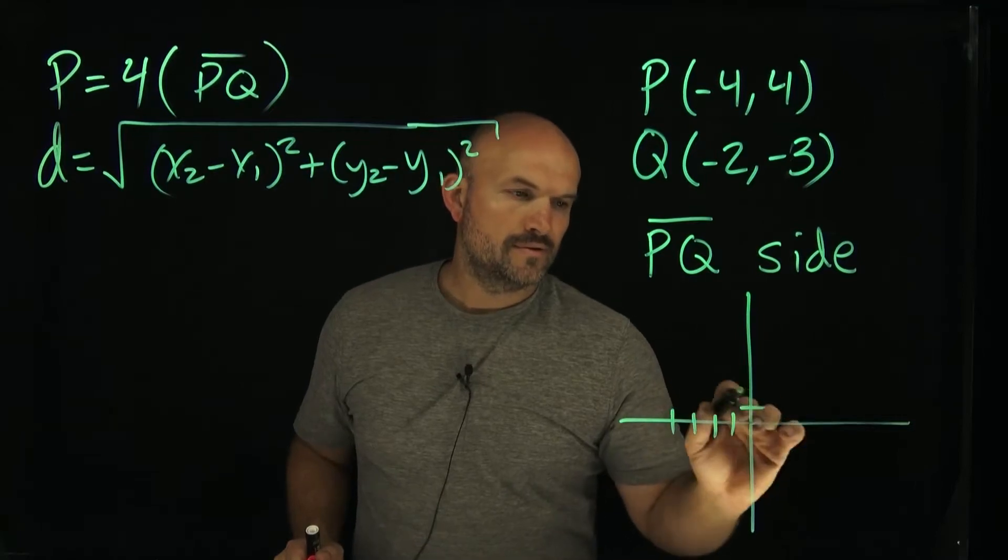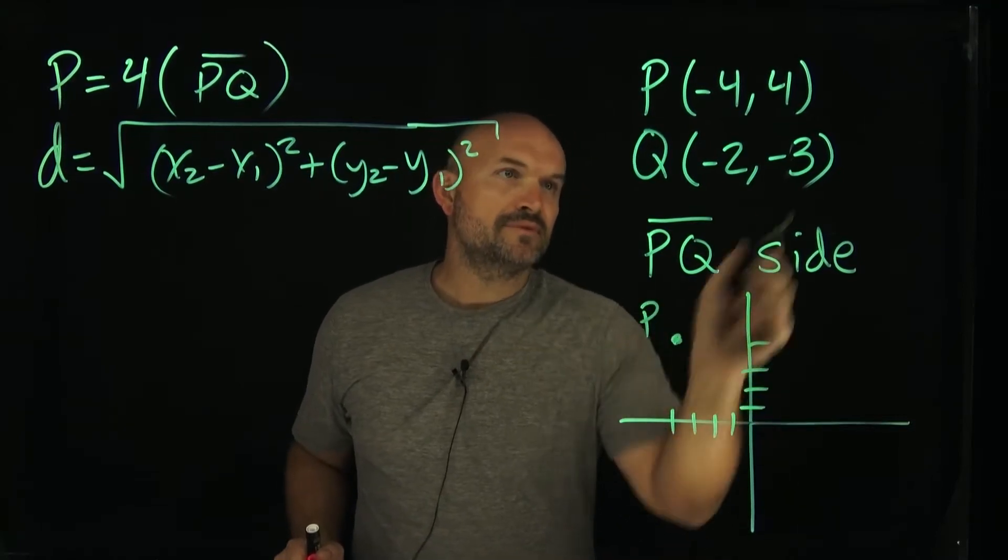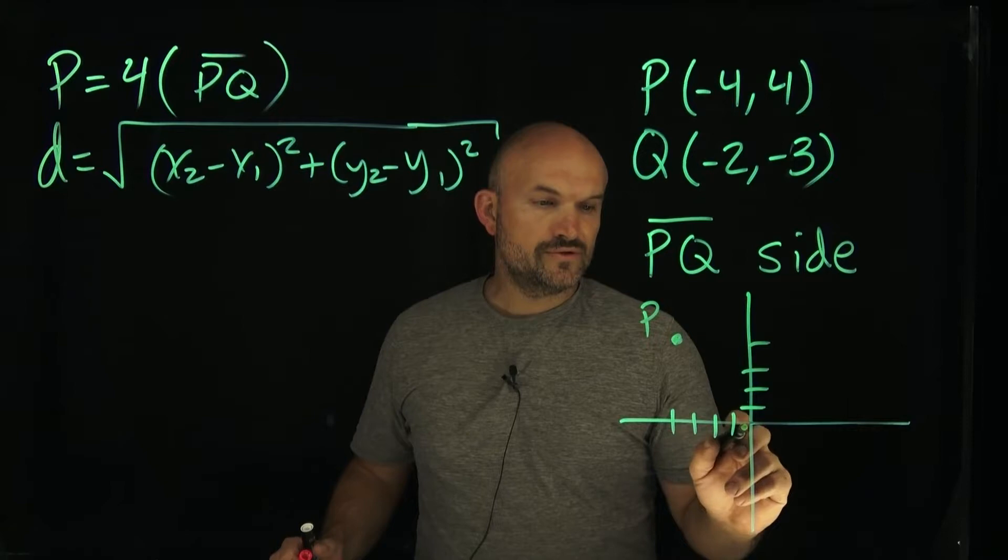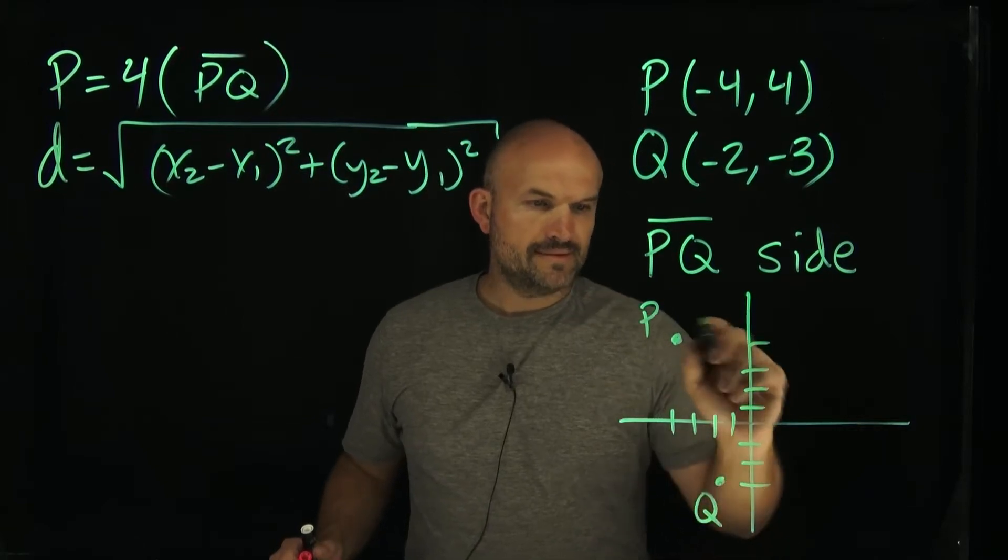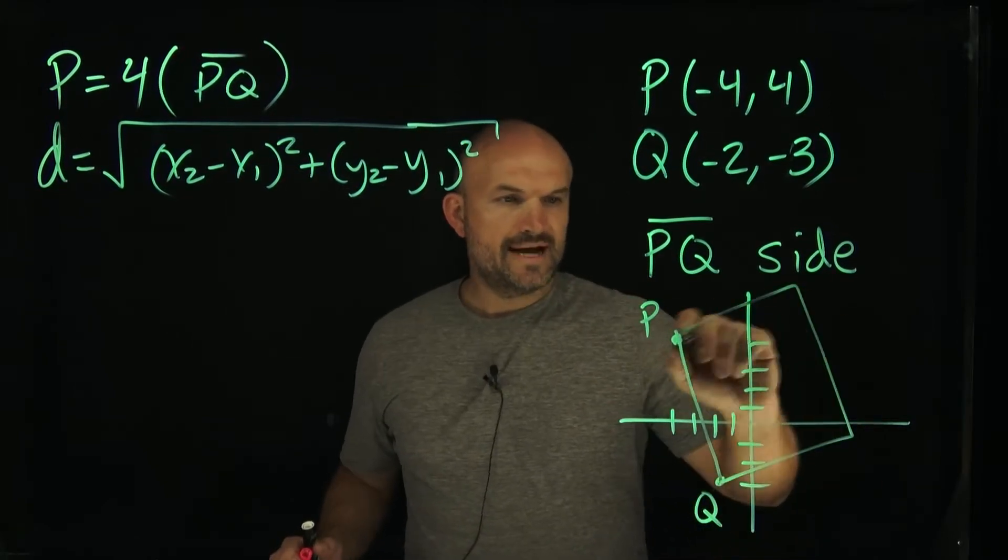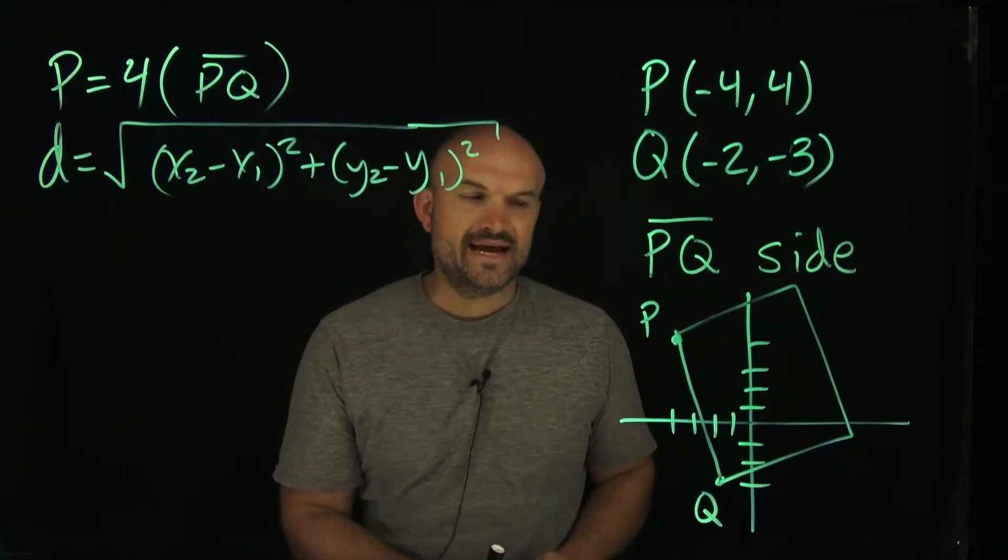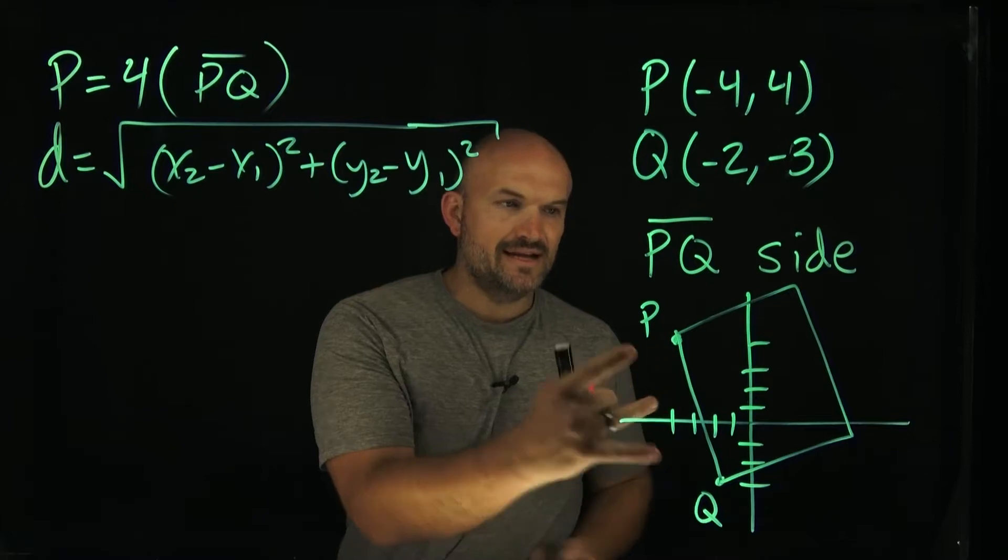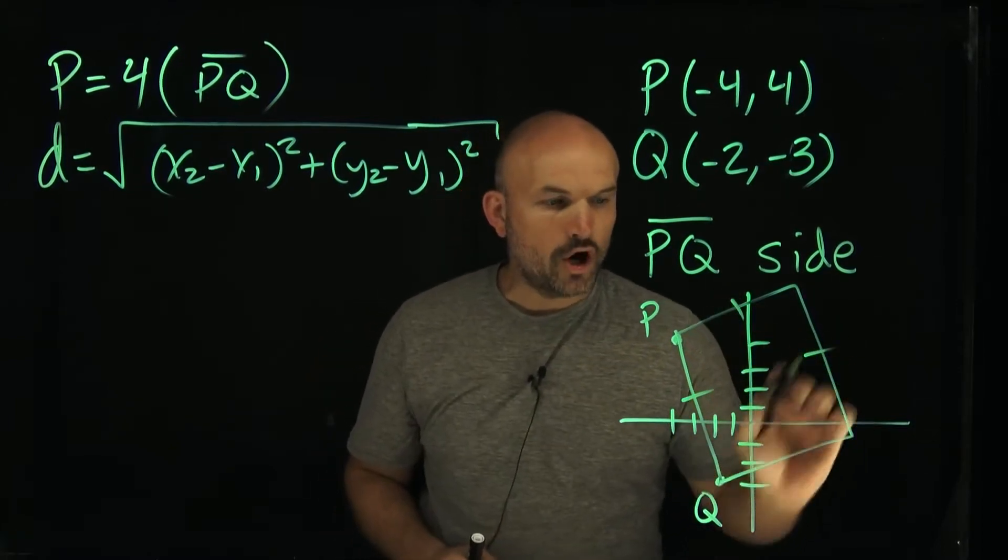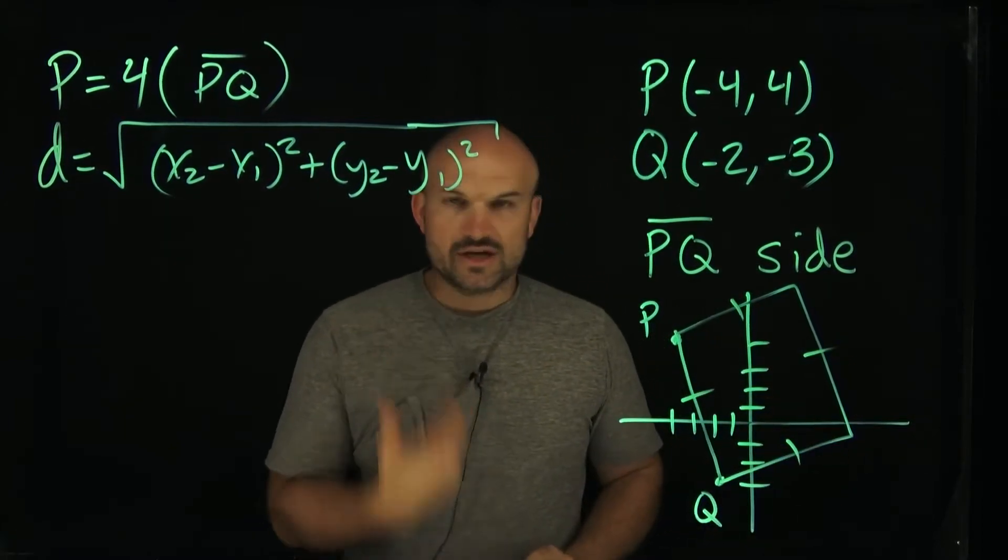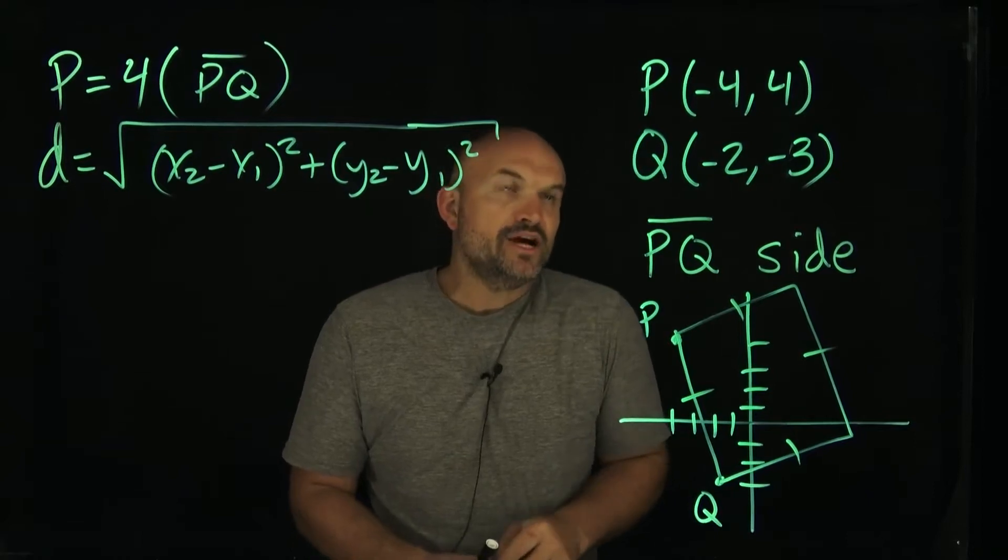So we have (-4,4), so that's going to be P. And then my Q is going to be (-2,3). Okay, so yeah, you can see, I don't know what this looks like, but it's going to look something like that on this diagonal. But the point that I want you guys to make is we're just looking for this distance. This distance is going to be the same for all four of these sides. So as long as we can find the distance here of one side, then we're good.